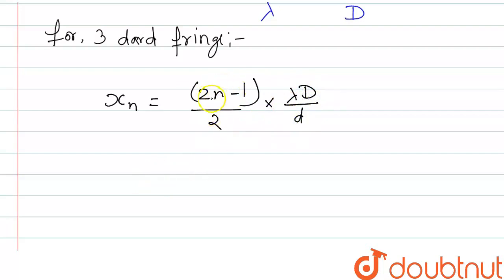So, if we put n=3, this will be 3×2, that is 6-1, that is 5/2 into λD/d.